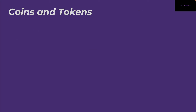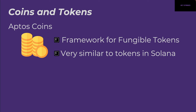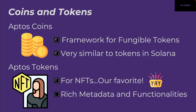Next, let's talk about coins and tokens. We have Aptos Coins, which is a framework for fungible tokens — these are similar to the whitelist tokens used for NFTs, just like Solana tokens. Then we have Aptos Tokens, used for NFTs, so they can store rich metadata and have all kinds of functionalities. It can get confusing because in Solana 'tokens' usually means fungible tokens, but in Aptos we have distinct coins and tokens.